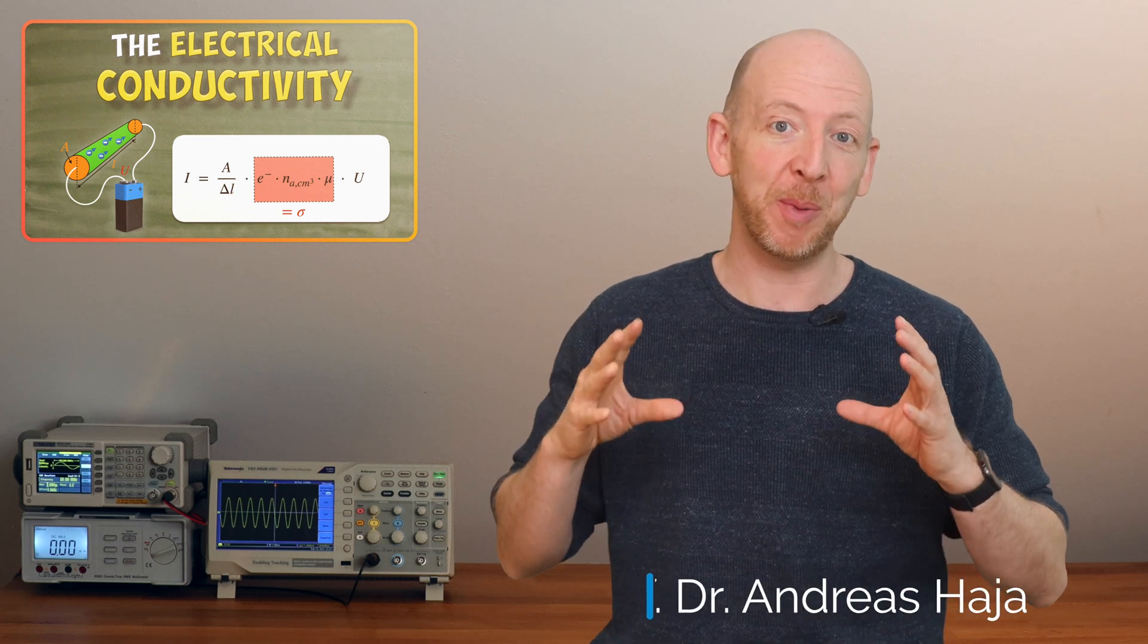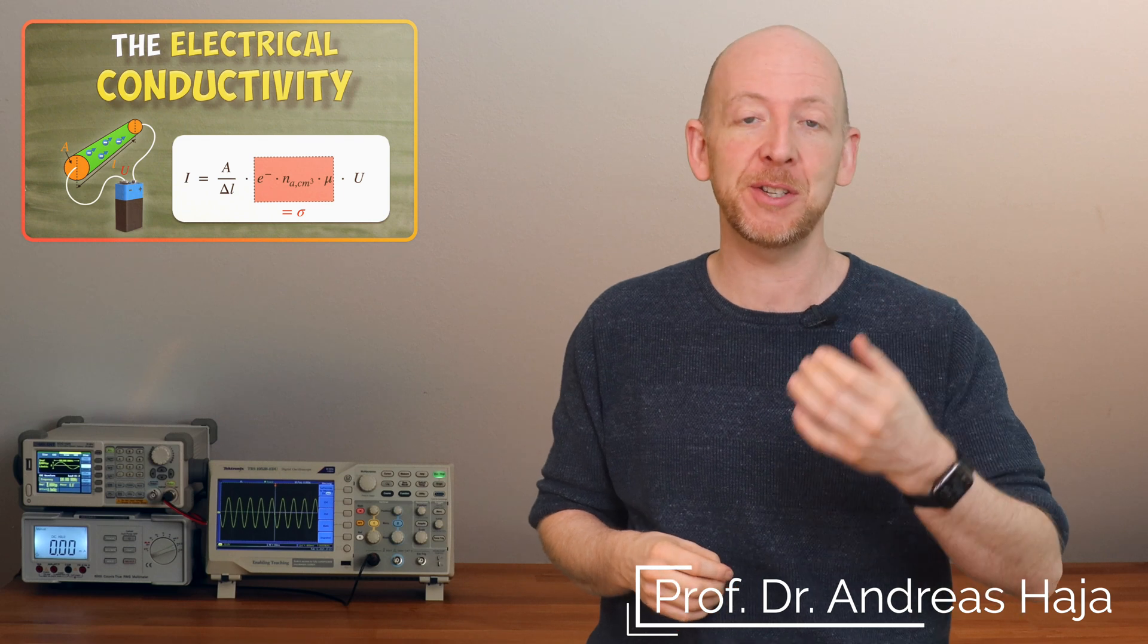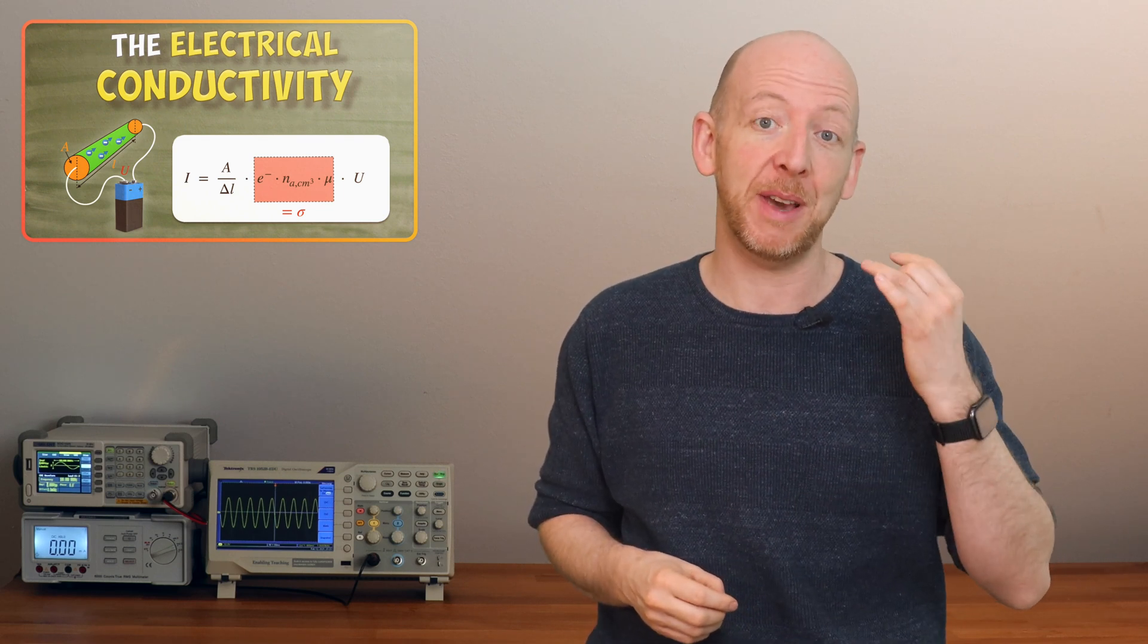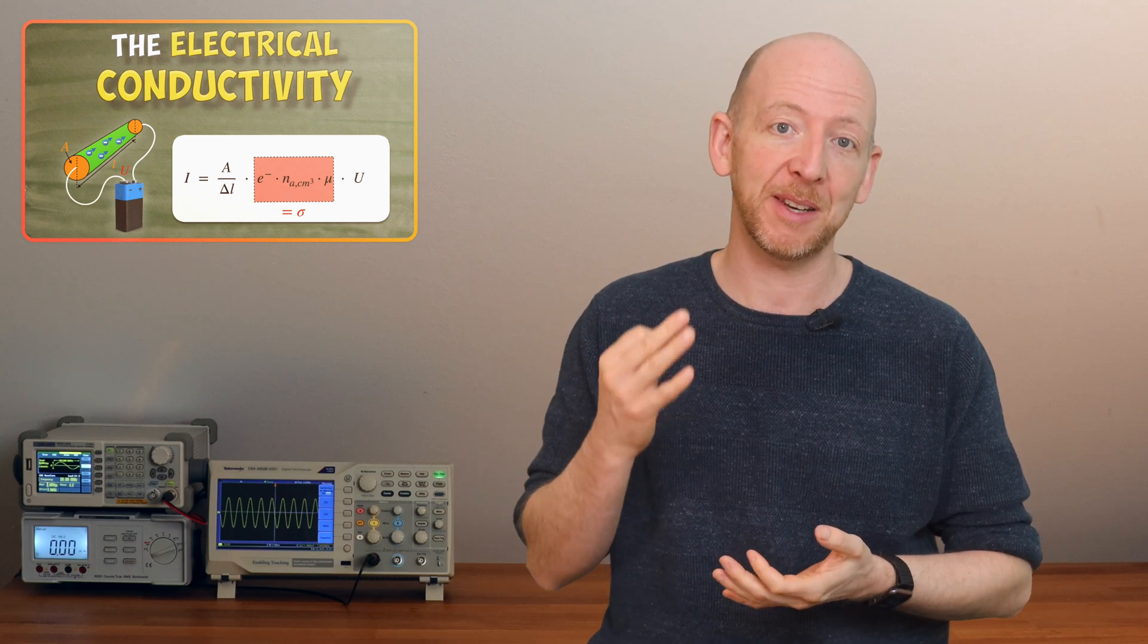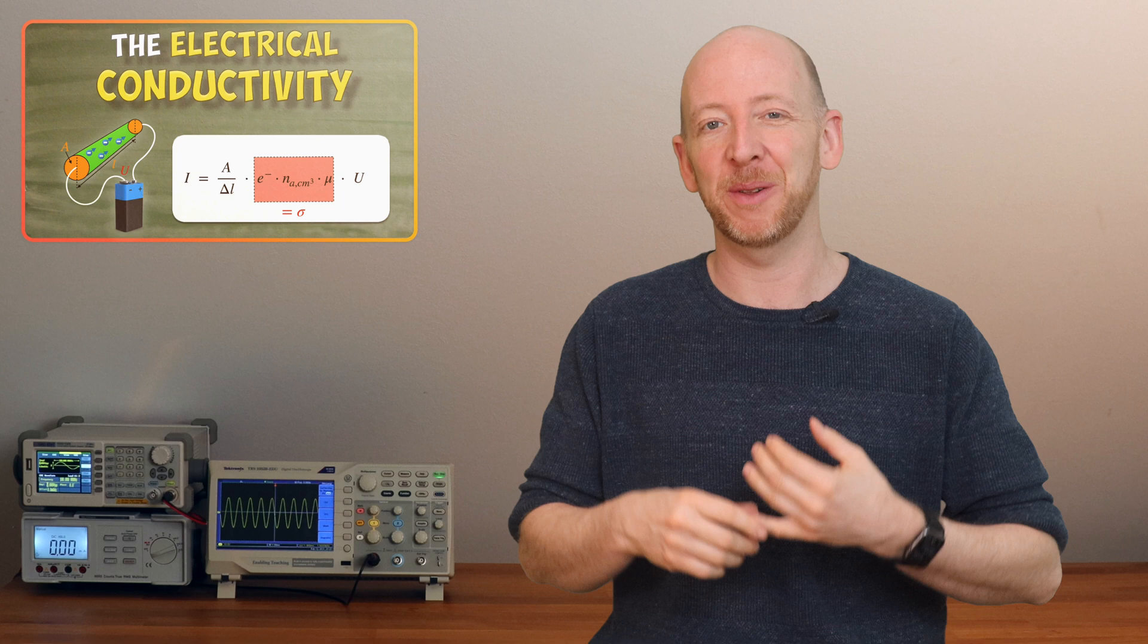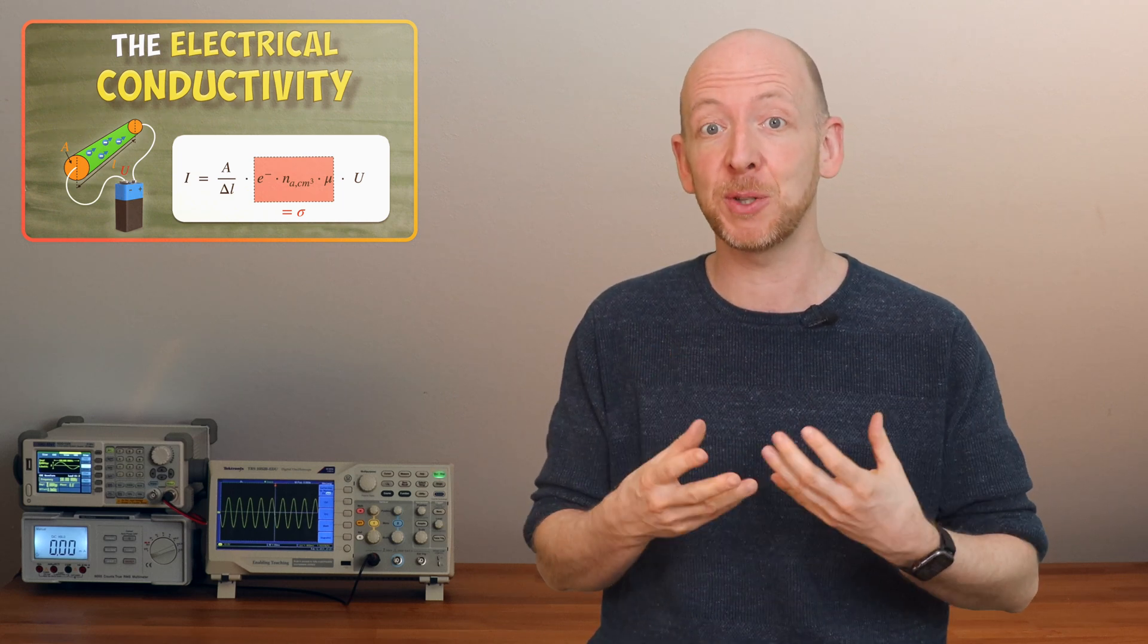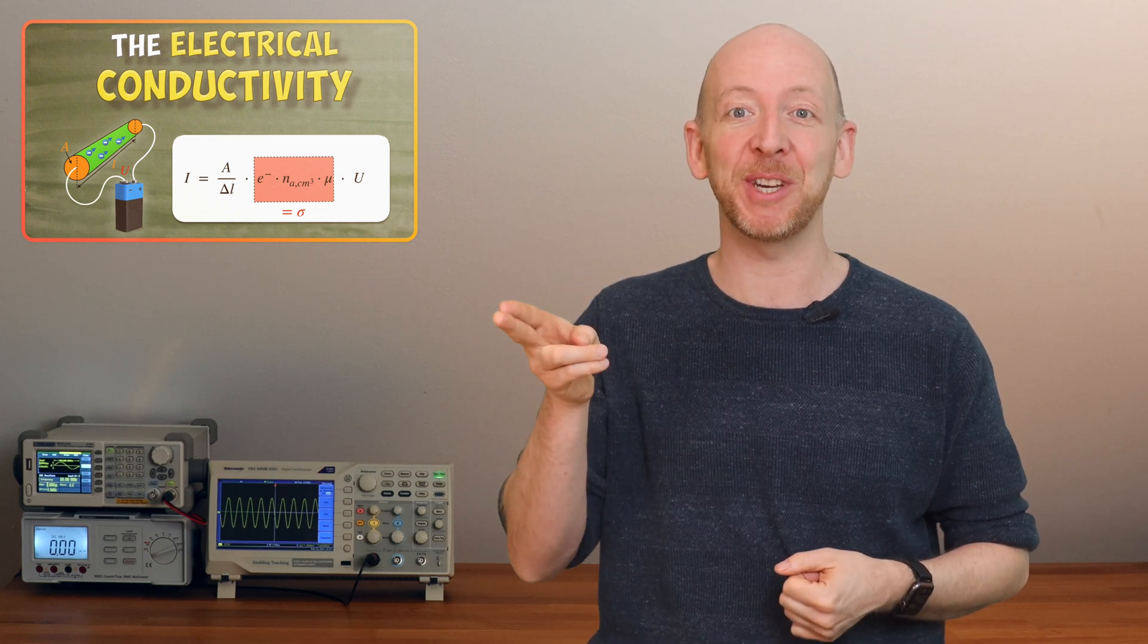In this video you will learn what the term electrical conductivity means and how it depends on the number of free charges in a conductor, let's say a copper wire, and also on the mobility of electrons within this wire. And we will also see how the strength of the electric current is affected by all this, and you will learn that conductivity is independent of the actual shape of the conductor. My name is Andreas from the Fearless Engineer and here we go.